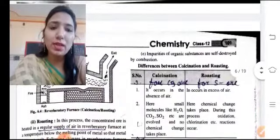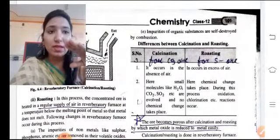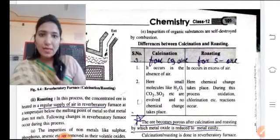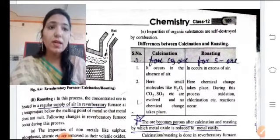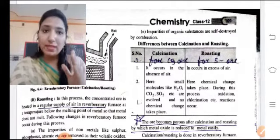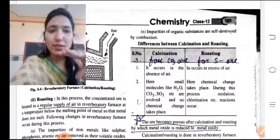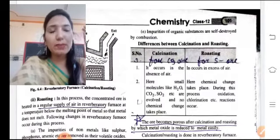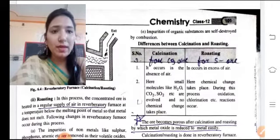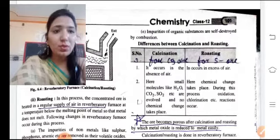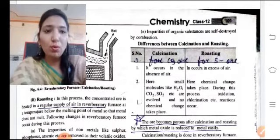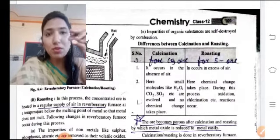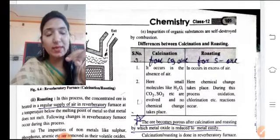Now, write the difference between calcination and roasting. Calcination — remember C for carbonate — is used for carbonate (CO3) compounds. It involves heating in absence of air. Roasting involves oxidation in presence of air. In calcination, carbonate compounds decompose. In roasting, sulfide ores are oxidized. After both processes, the ore becomes porous.